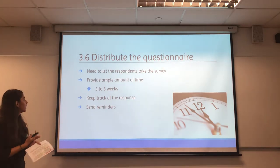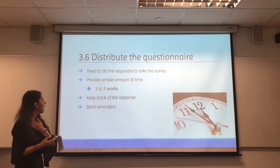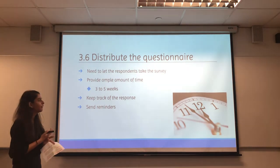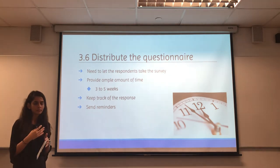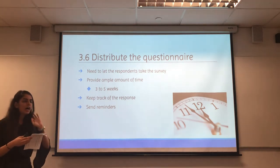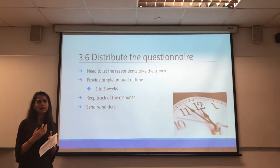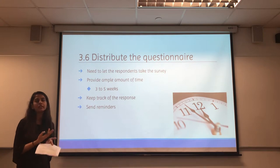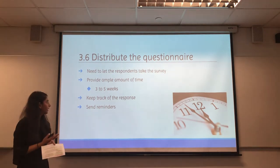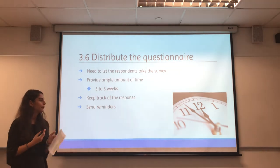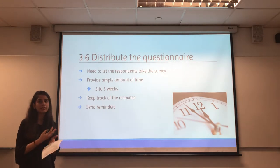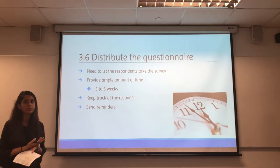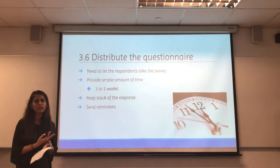After receiving feedback from the simulation and making necessary improvements, they would have to distribute the questionnaire, ensuring respondents have enough time to take it. Usually 3 to 5 weeks is a good timeframe. This is to ensure sufficient respondents are reached; with too little time, they won't collect enough data to understand the objectives or draw conclusions. Orion developers should also keep track of responses, and if there are not enough respondents, they can send reminders — this is especially easy for web-based questionnaires.